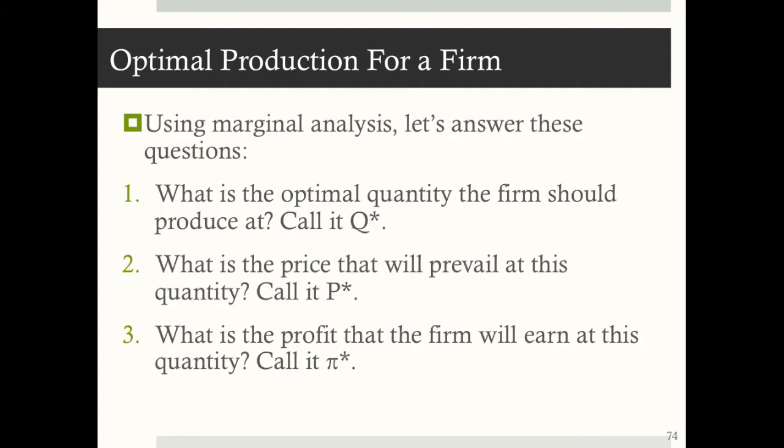We want to use marginal analysis to answer the following questions: What is the optimal quantity the firm should produce, Q*? What is the price that will prevail at this quantity, P*? And what is the profit the firm will earn at this quantity, π*? Pi indicates profit when we're talking about firm production decisions. We'll also graph these results to complement the analysis.